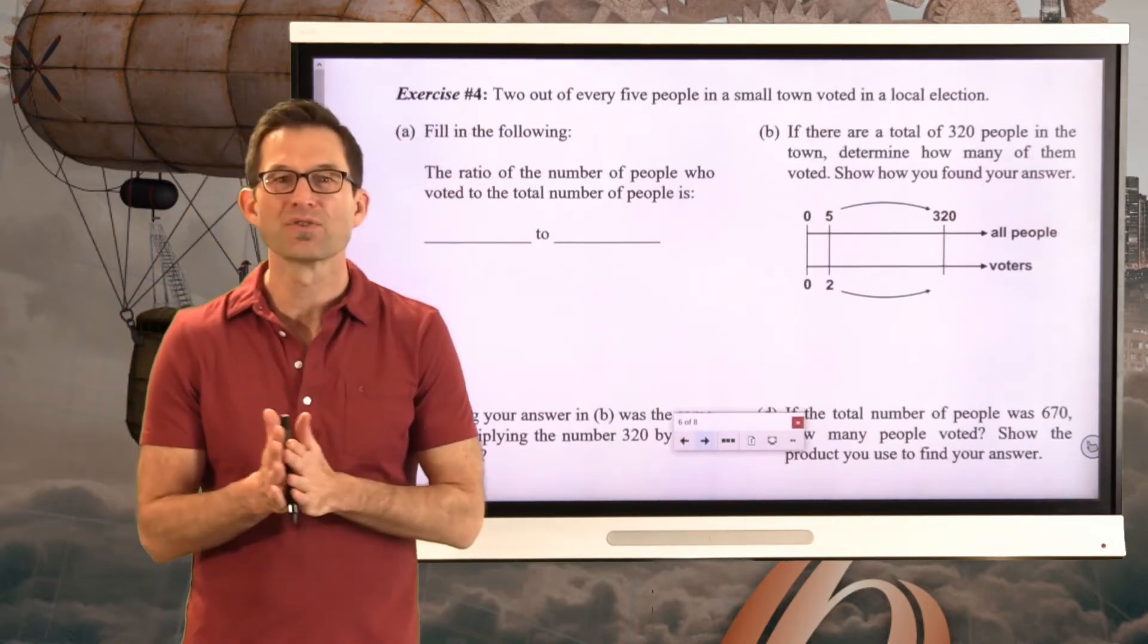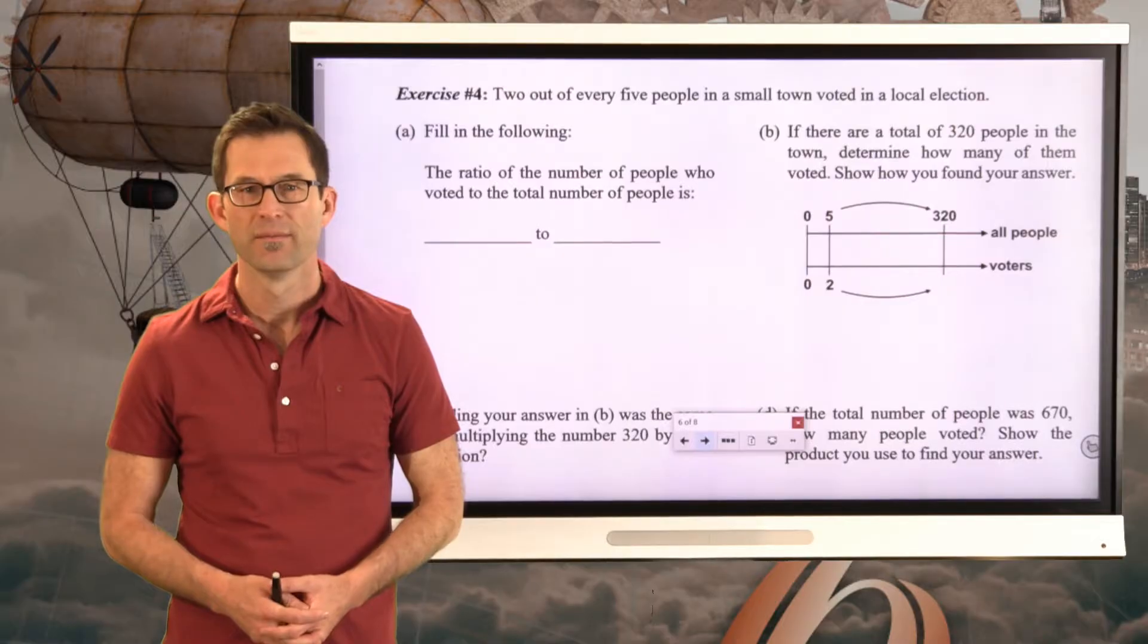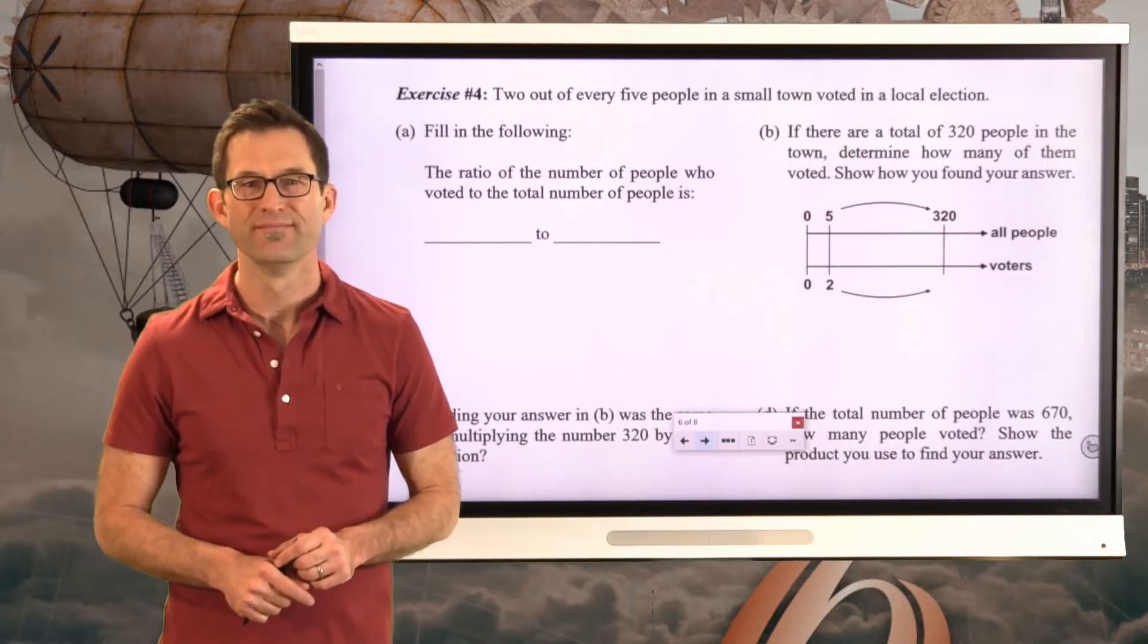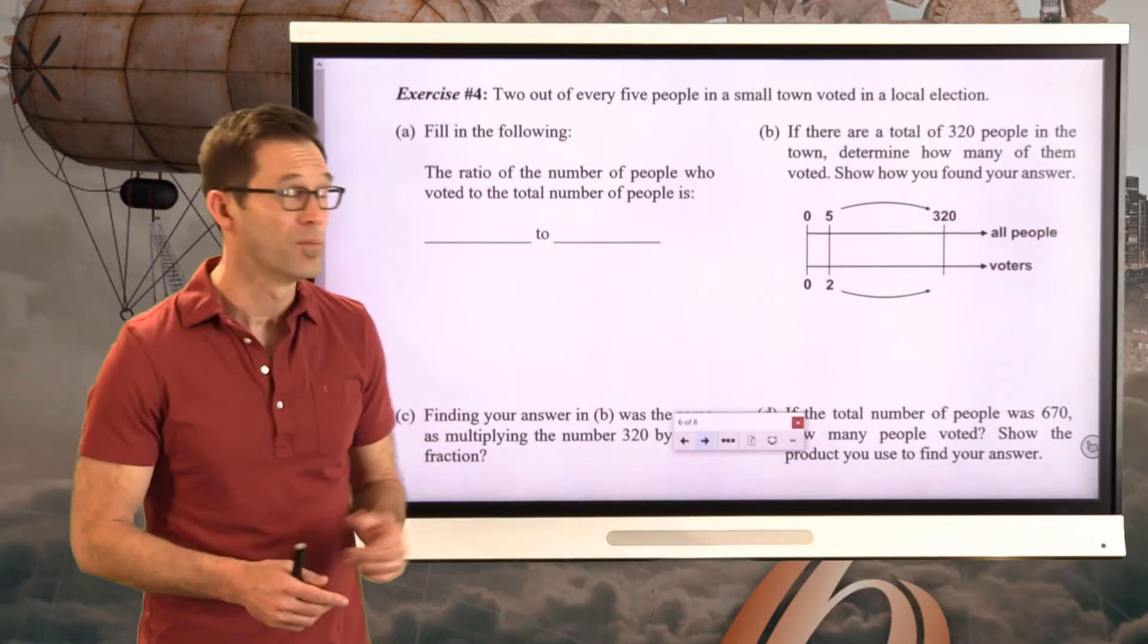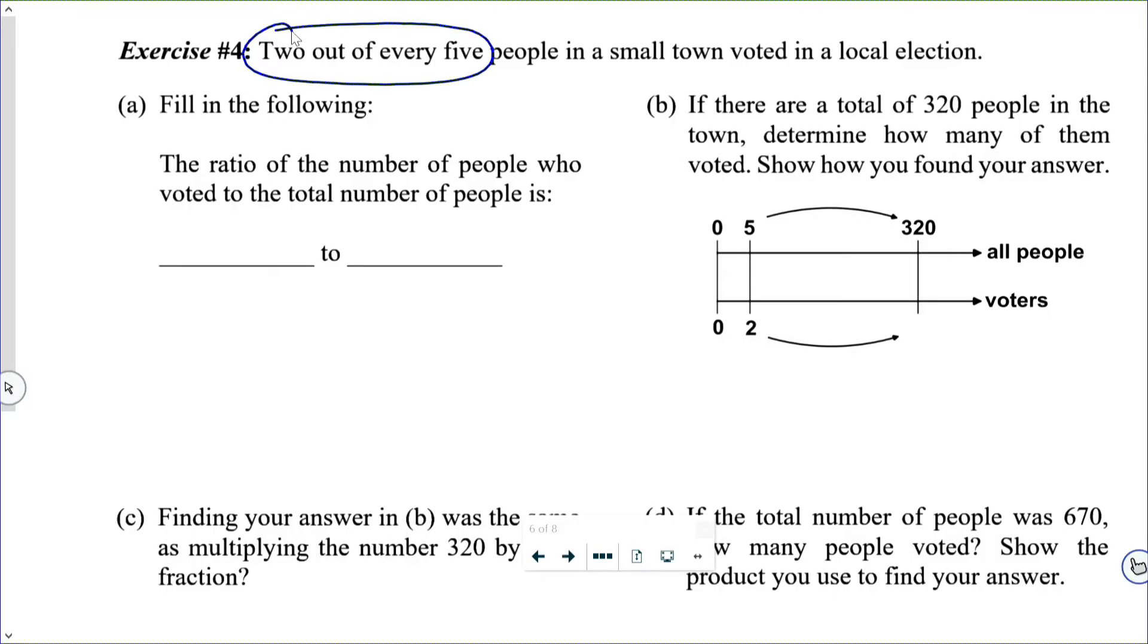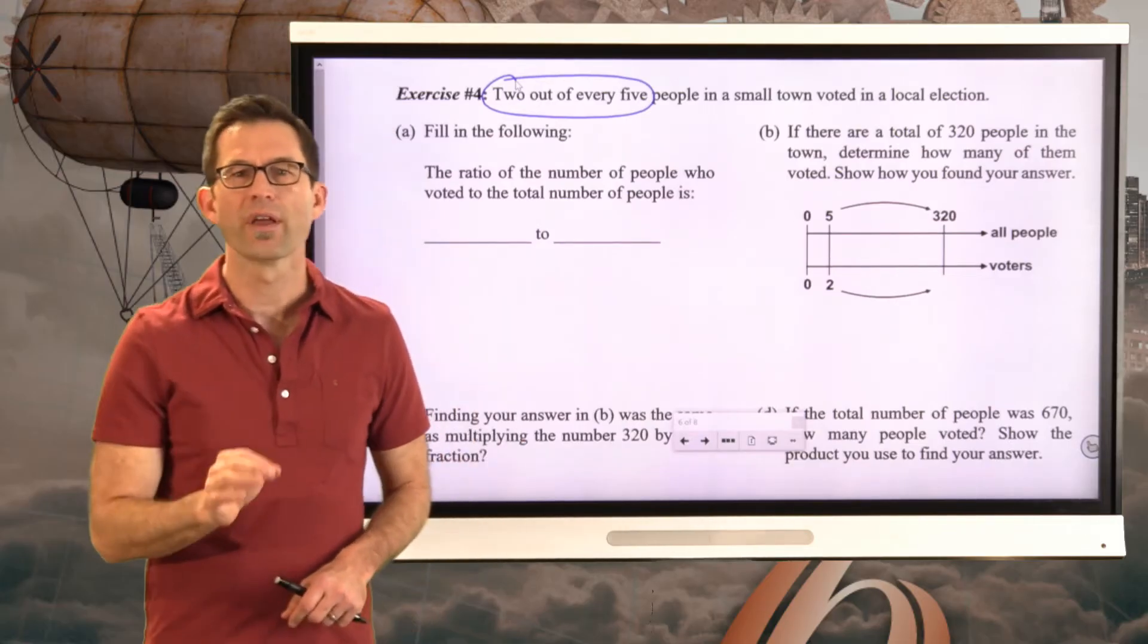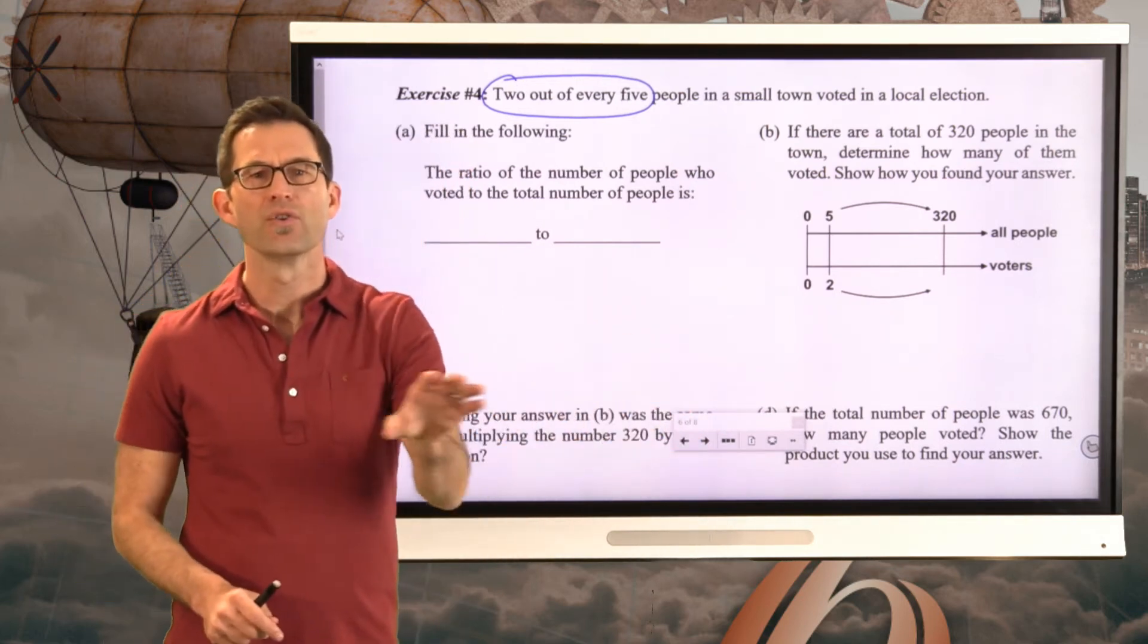Here we go. Exercise number four. Two out of every five people in a small town voted in a local election. Fill in the following. The ratio of the number of people who voted to the total number of people is blank to blank. Why don't you go ahead and fill that in?